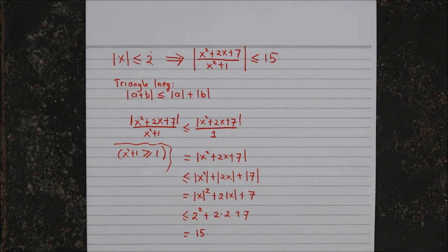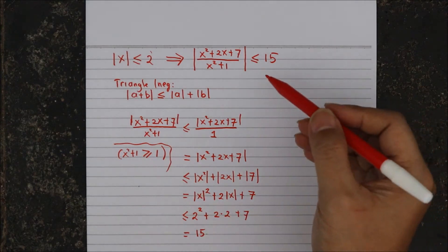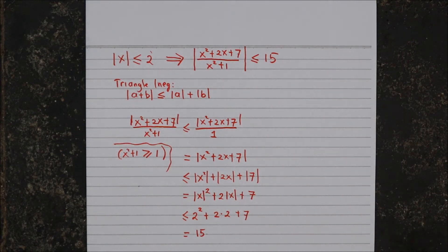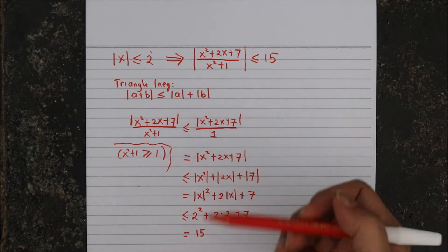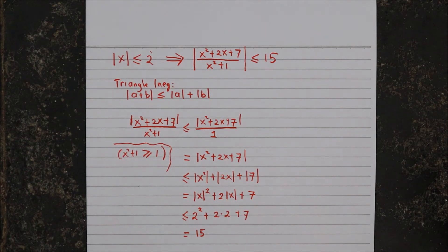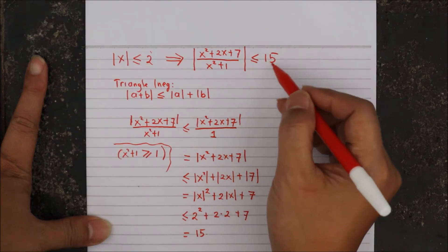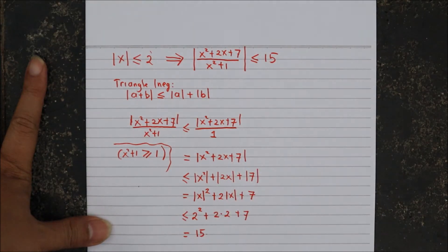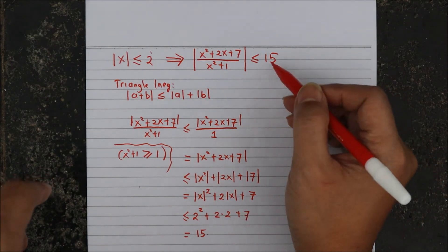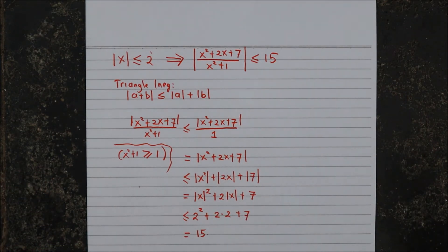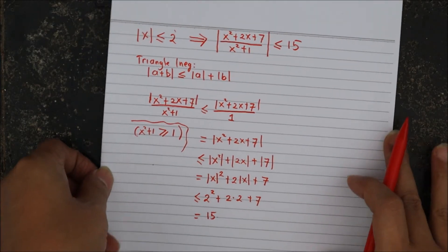This 15 is just a rough estimate, a rough upper bound for this expression. The way we obtained this upper bound using the triangle inequality is probably not the only way to reach that conclusion — you might use some other argument to arrive at the same conclusion. This 15 might not be the best upper bound. Let's see if we can make this upper bound smaller by using a more clever procedure.